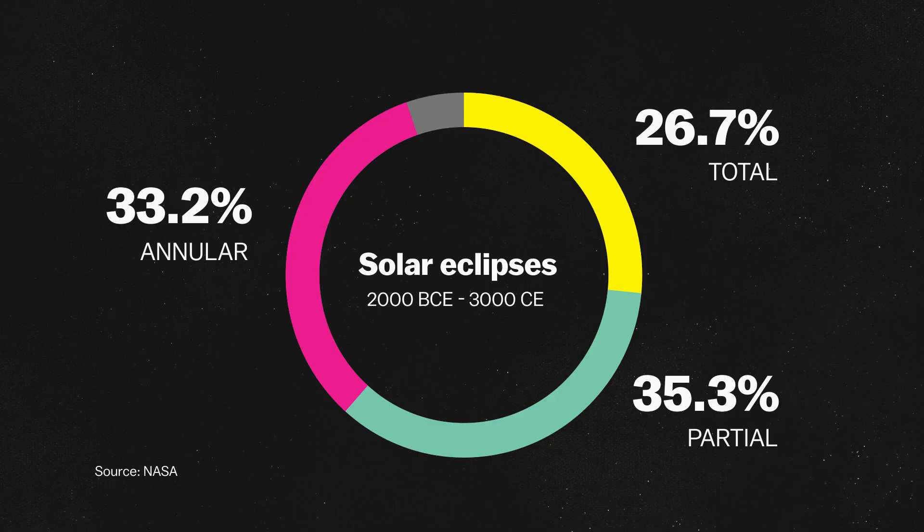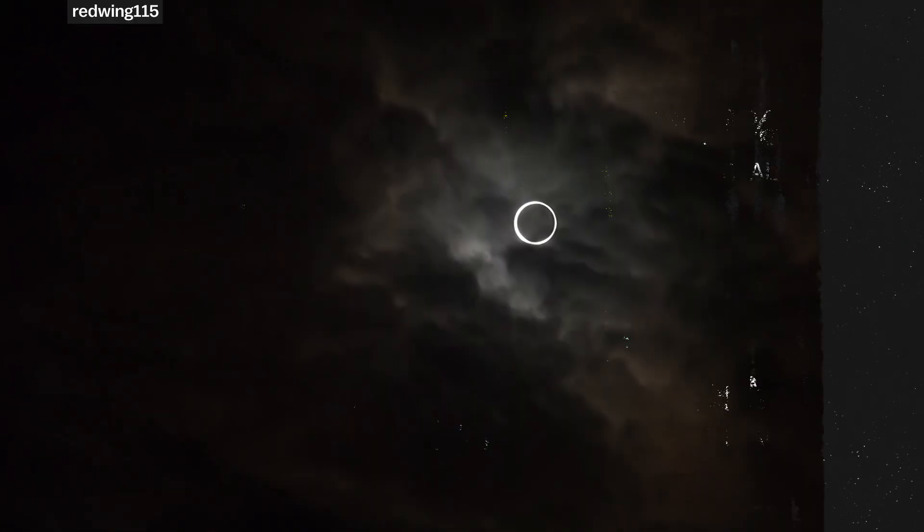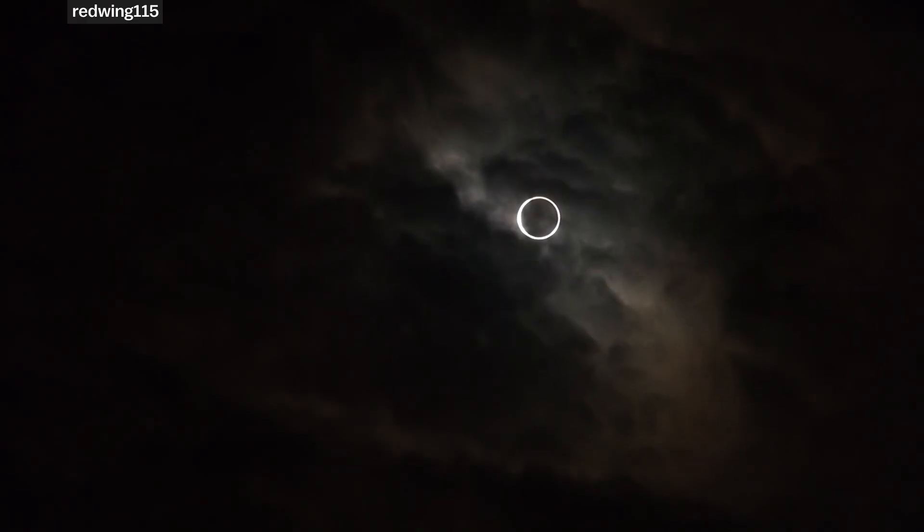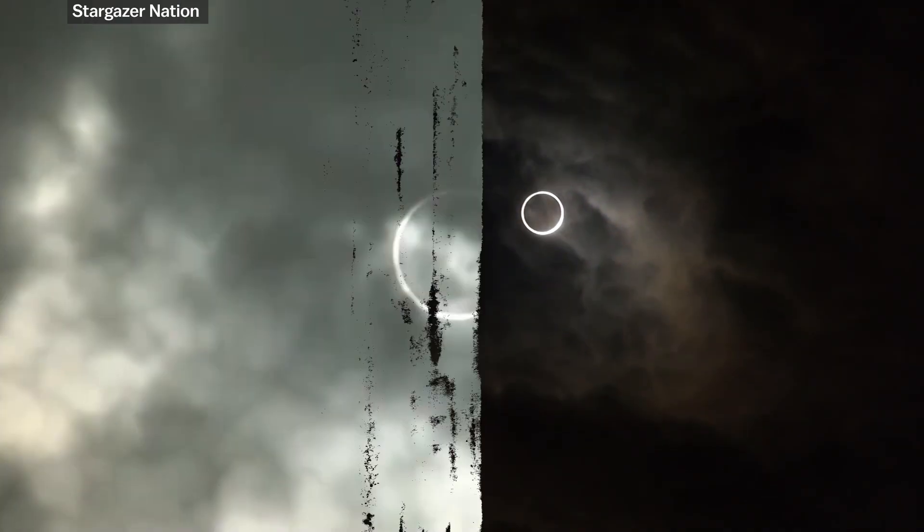More often, we get partial eclipses, where the alignment is a bit off, or annular eclipses, where the moon is too far away to fully block the sun, leaving a ring of sunlight around the moon.